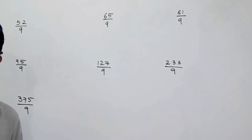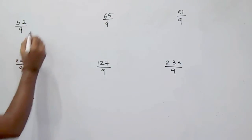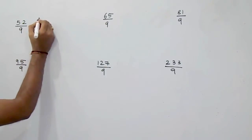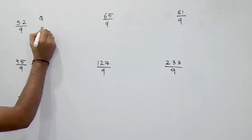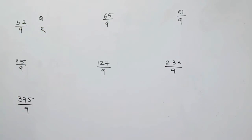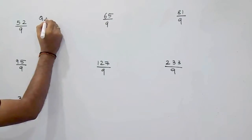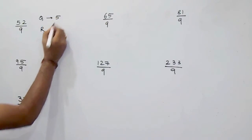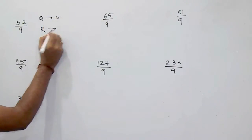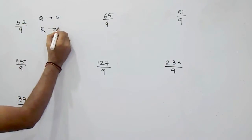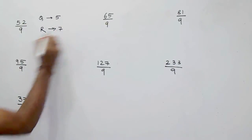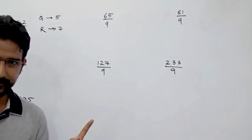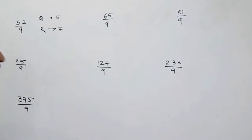Example 1 is 52 divided by 9. We are going to write in the format: quotient and remainder. When you divide 52 by 9, the quotient will be the first digit, that is 5. And the remainder will be 5 plus 2, that is 7. So your quotient is 5 and the remainder is 7.